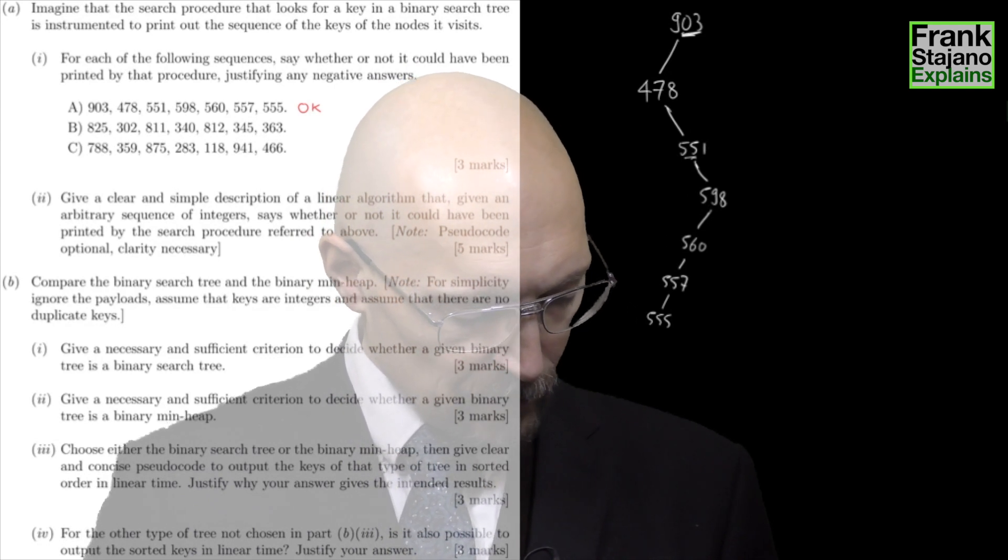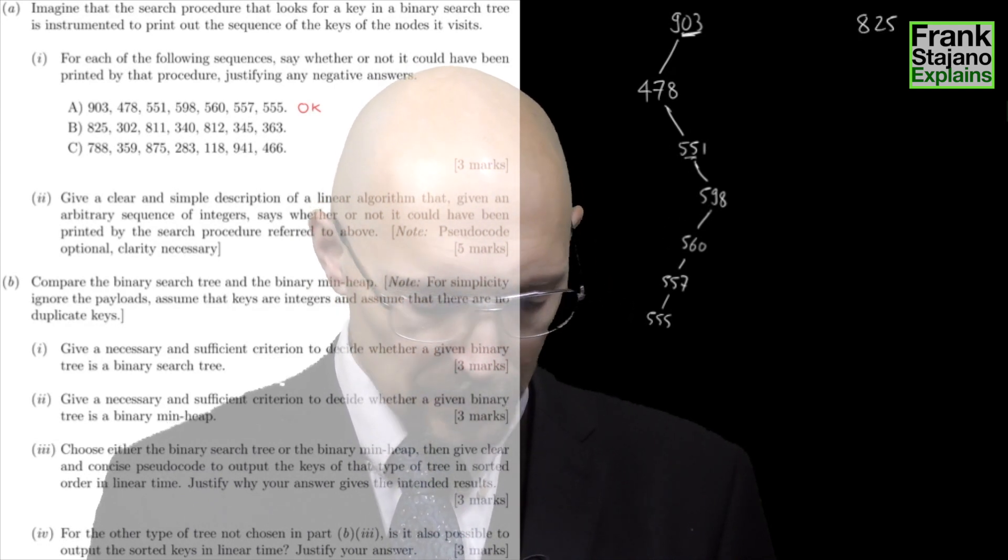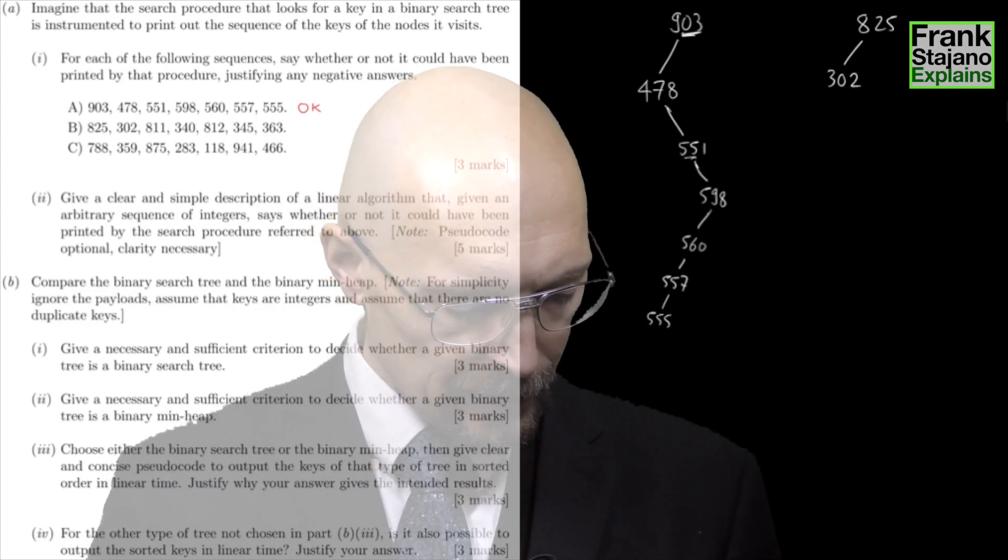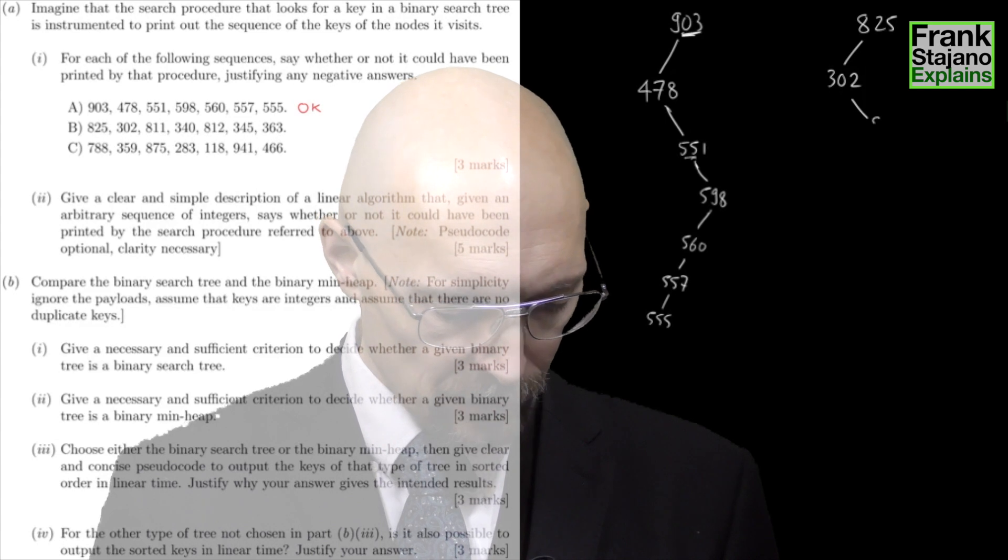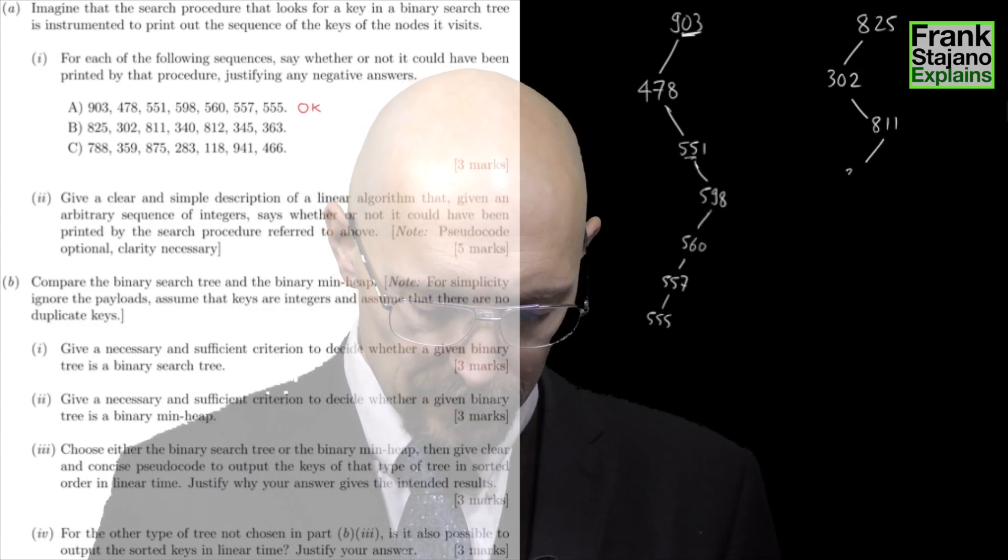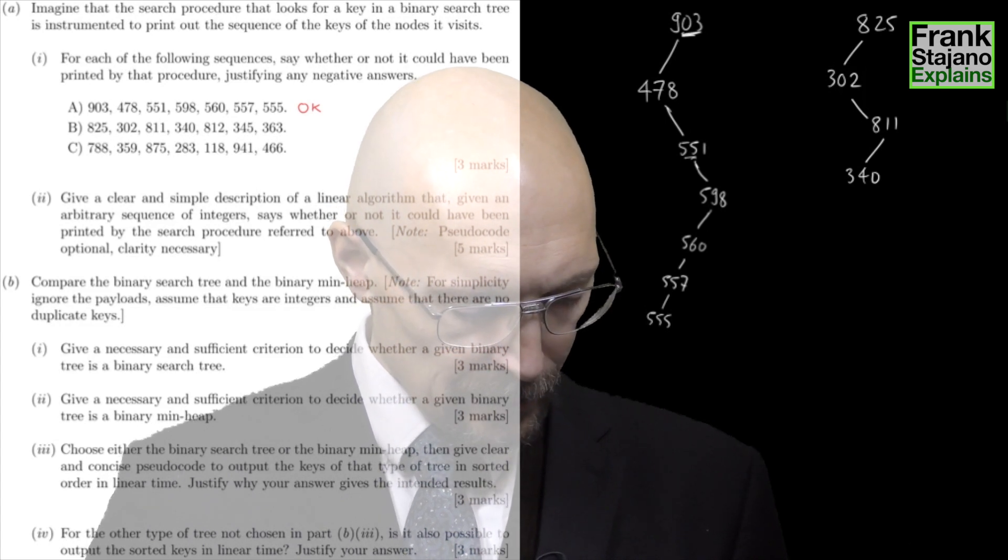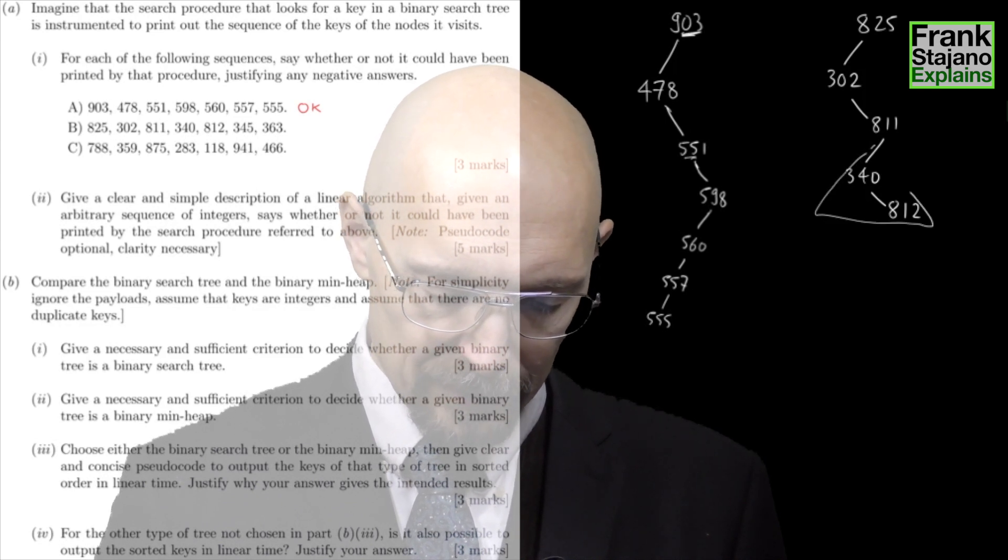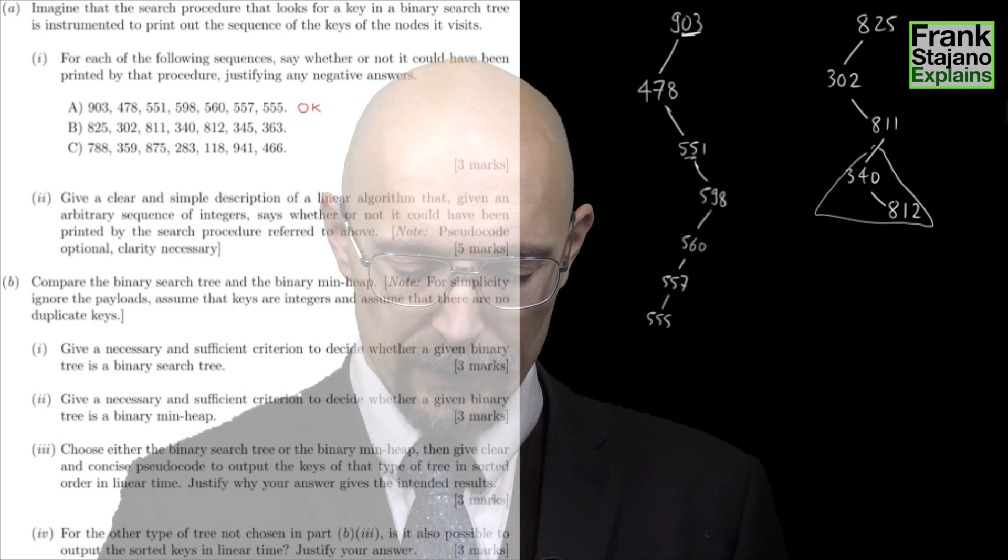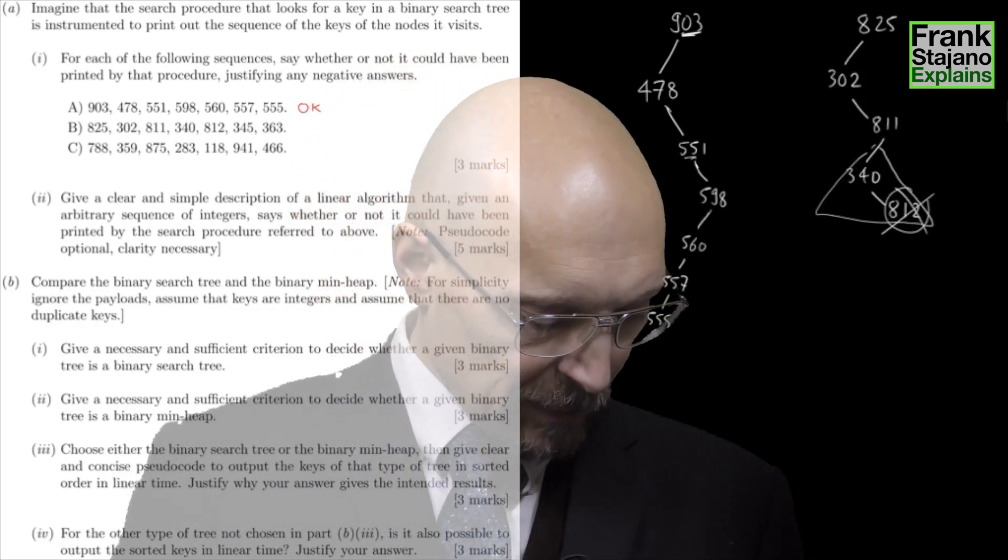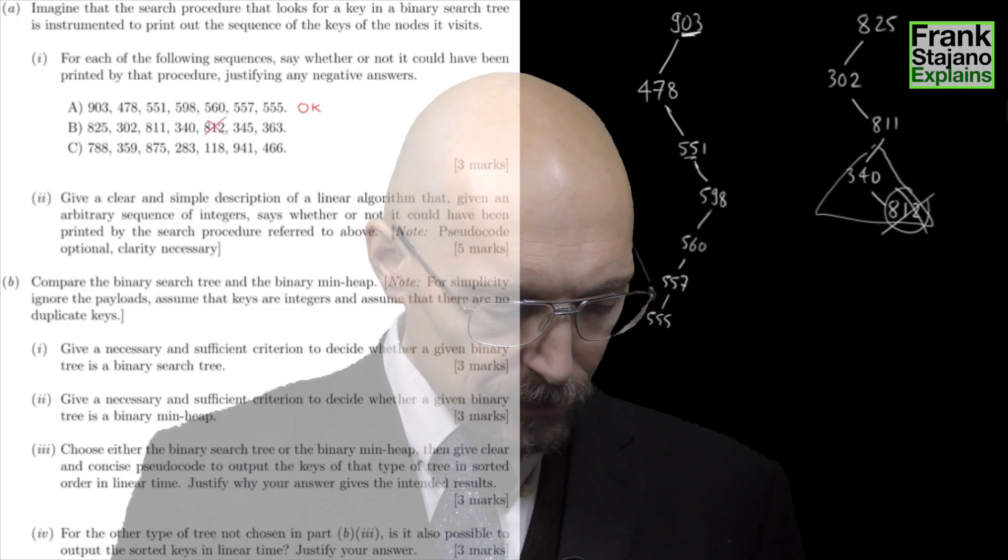What about the next one? 825, then I go left into 302, then I go right into 811, that's all fine. Then I go left into 340, that's okay. Then I go right into 812. Well that's not good because if I'm here in the left subtree of 811 I cannot have something bigger than 811. So that one makes it not possible, so no.